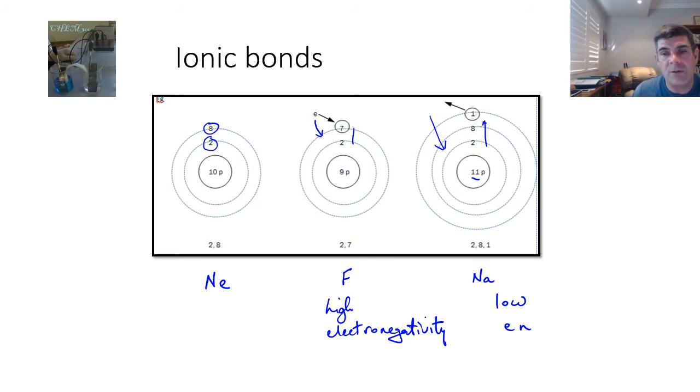What happens when these two get close together is this electron here is attracted by the nucleus of the fluorine atom. As a consequence, the electron actually moves from this atom's cloud region to this atom's. The consequence of that is we have a change in the electron configurations to mimic that of neon.